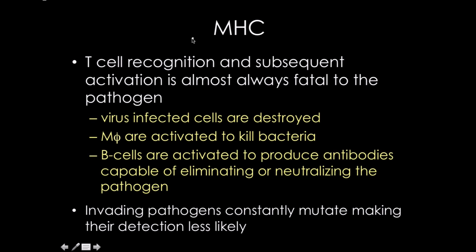T cell recognition and subsequent activation is almost always fatal to the pathogen. Pathogens have ways of blocking these mechanisms — for example, TB survives inside cells and resists phagocytosis — but if it were to actually result in T cell activation, even multicellular parasites cannot survive that type of response. So this is the most effective means of killing things. Virally infected cells are destroyed, macrophages are activated to kill bacteria, and B cells are activated to produce antibodies capable of eliminating and neutralizing the pathogen.